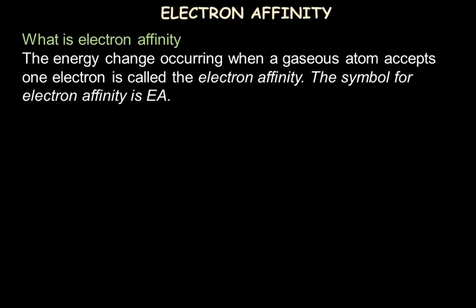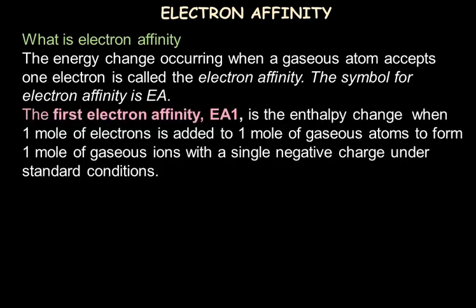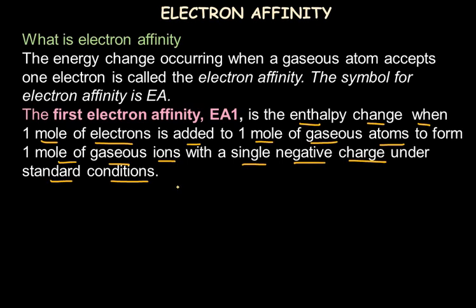An atom of an element may gain multiple electrons — maybe one, or if an atom turns out to be a 2-minus charged ion, it gains two electrons on its single atom, and so on. The energy values during this process will be different. The first electron affinity, Ea1, is the enthalpy change when one mole of electrons is added to one mole of gaseous atoms to form one mole of gaseous ions with a single negative charge under standard conditions.